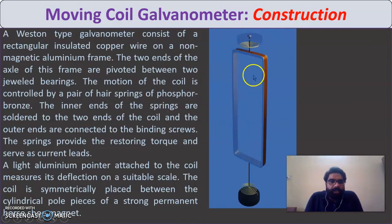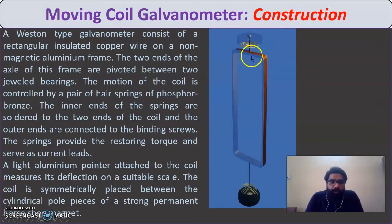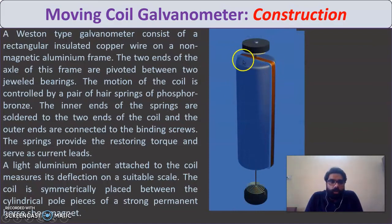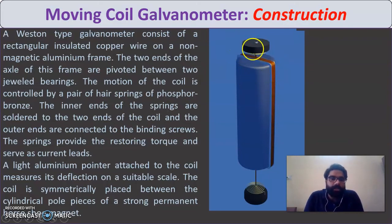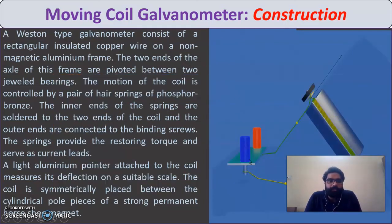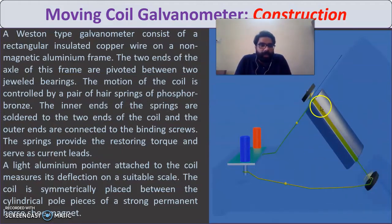Now, to keep the magnetic field radial inside the galvanometer, we place a soft iron cylindrical core inside. A cylindrical-shaped soft iron core is placed between the coil and the magnets, and the aluminum frame with copper wire is wrapped over it. This arrangement is key to making the field radial.